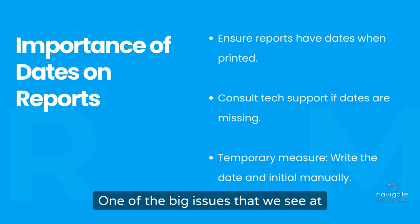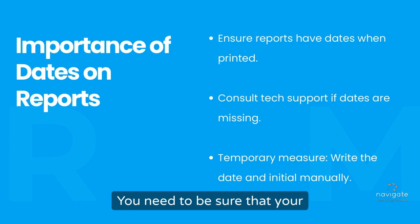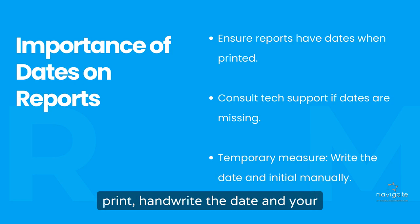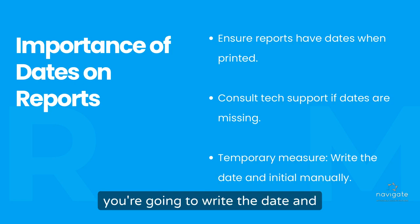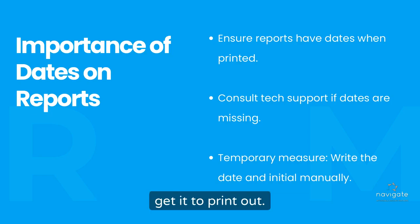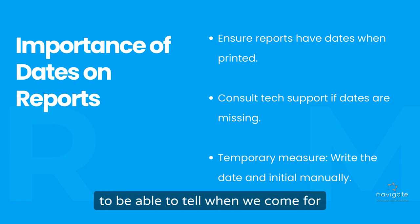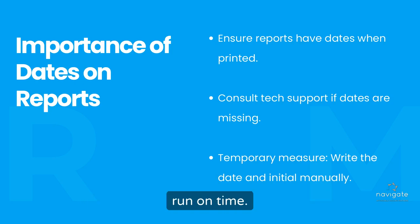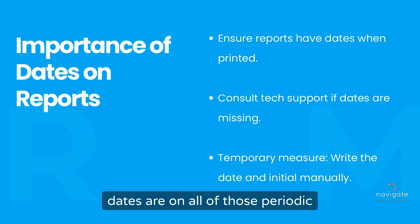One of the big issues we see at MORs is not having dates on reports. You need to be sure that your reports have the dates either printed on them, or if you can't get those dates to print, handwrite the date and your initials — just like you would with an application. With EIV reports, it's either going to print out on the report, or you're going to handwrite the date and initial it. You can consult your tech support if they're not printing — it's usually just changing the settings on your computer. You need to make sure the dates are on those reports; it's the only way we'll be able to tell when we come for your MOR whether those reports were run on time.